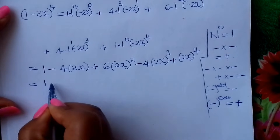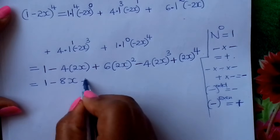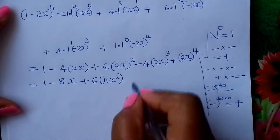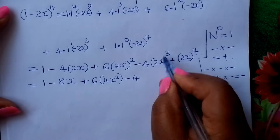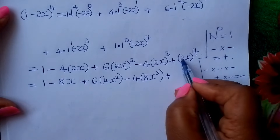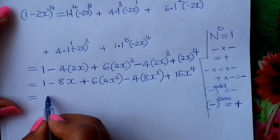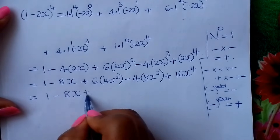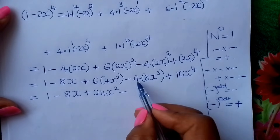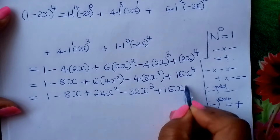Then you simplify further. We write: 1 minus 8x. Then plus 6 times 4x squared gives us 24x squared. Minus 4 times 8x cubed gives us 32x cubed. And finally plus 16x raised to 4. So the full expansion is 1 minus 8x plus 24x squared minus 32x cubed plus 16x raised to 4.